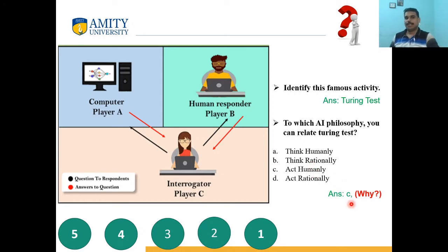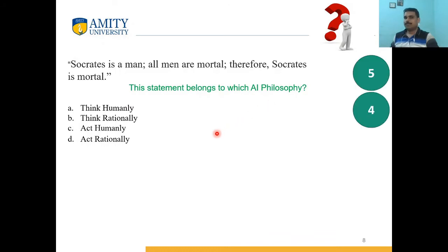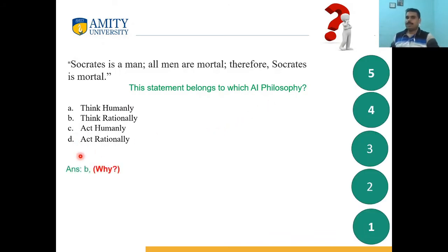The answer is C — Act humanly. How the computer is generating the output and how the human responder is generating the output is not something the interrogator is concerned about. Consider the syllogism: Socrates is a man; all men are mortal; therefore, Socrates is mortal. This statement belongs to which AI philosophy? The answer is Think rationally, as there is a sequence of statements concluding something.